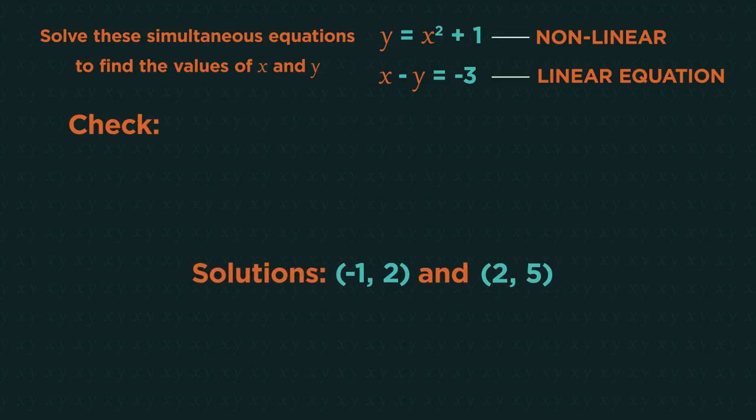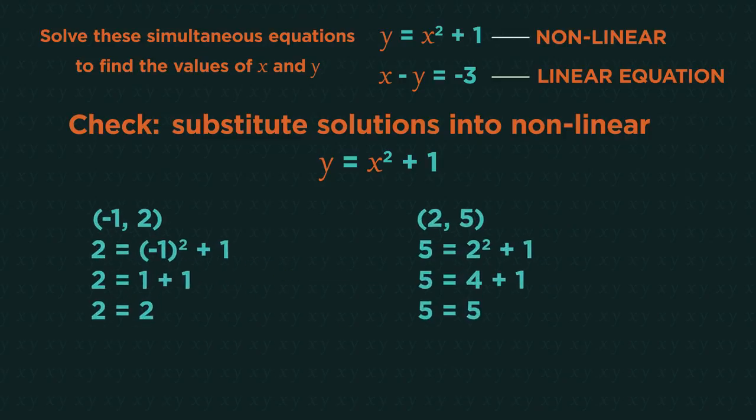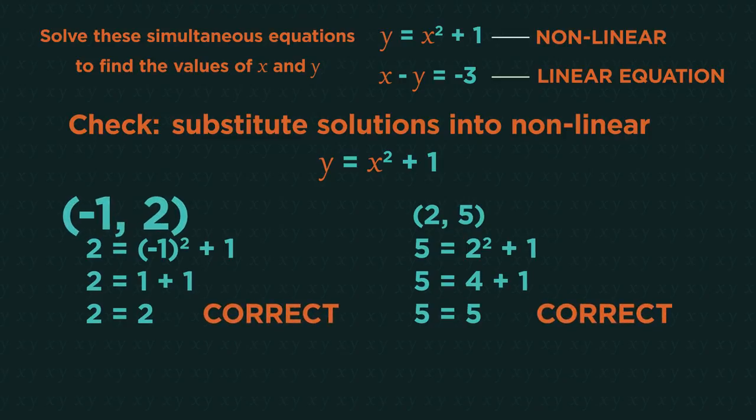As always with maths, we should double check our answers. Substitute the solutions negative 1, 2 and 2, 5 into the non-linear equation. For negative 1, 2: 2 equals negative 1 squared plus 1. 2 equals 2, which is correct. And the same for 2, 5.